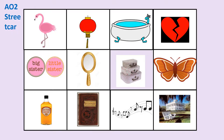Here on this slide are some of the key symbols and images used in A Streetcar Named Desire, particularly for AO2 when you need to analyse the use of key quotations, symbolism, dramatic devices, or recurring motifs. Take a look now and see which ones you can identify or which moments in the play you recognise.